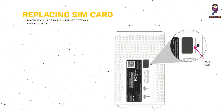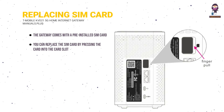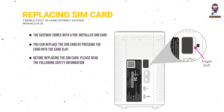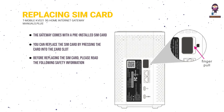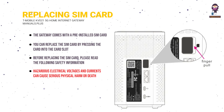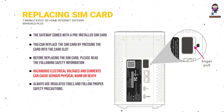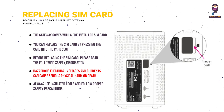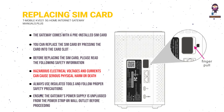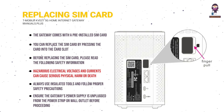Replacing the SIM Card: the gateway comes with a pre-installed SIM card. You can replace the SIM card by pressing the card into the card slot. Before replacing the SIM card, please read the following safety information: hazardous electrical voltages and currents can cause serious physical harm or death. Always use insulated tools and follow proper safety precautions when connecting or disconnecting power circuits. Ensure the gateway's power supply is unplugged from the power strip or wall outlet before proceeding.